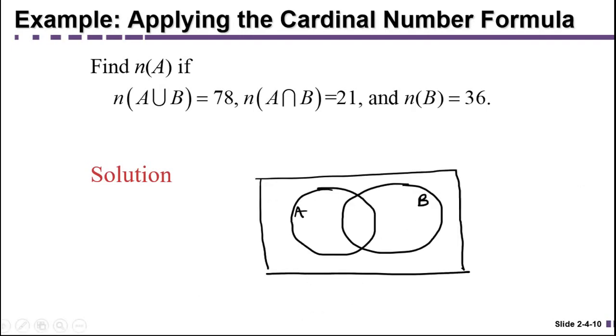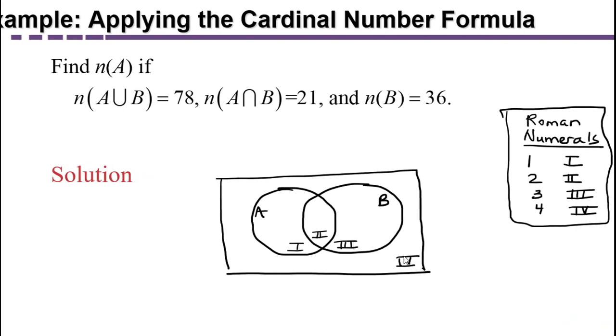Another way to work this problem is to draw a Venn diagram and fill in the facts that we know. In order to talk about the regions of the Venn diagram, I've labeled them with Roman numerals 1, 2, 3, and 4. By the way, all two set Venn diagrams have four regions.